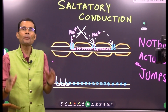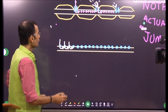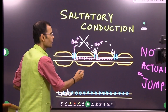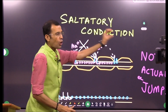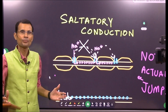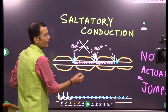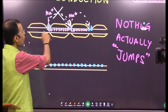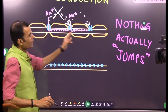Nothing is going jumping from node to node — jumping is only a perception. Why? Because compared to the unmyelinated axon where every next point shows depolarization and generates an action potential, in the myelinated axon the action potential is generated at long, long distances — so it appears as if it has jumped. That is why the name saltatory conduction was given. But again, nothing actually jumps. It's a combination of electrotonic conduction and action potential at the nodes of Ranvier.